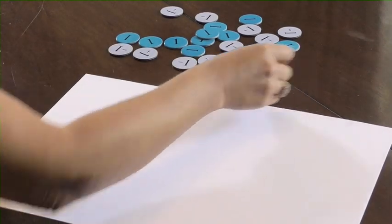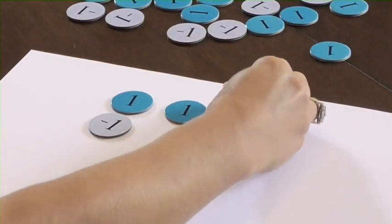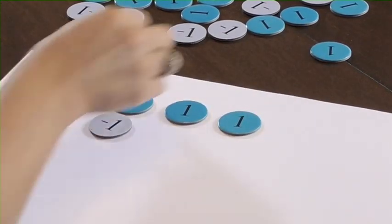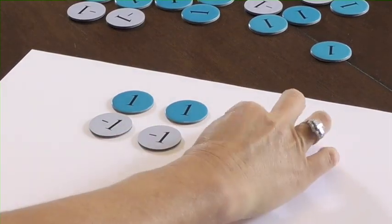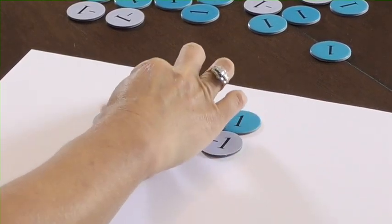Or, if we've got three, for example, and negative three, we've got three zero pairs.